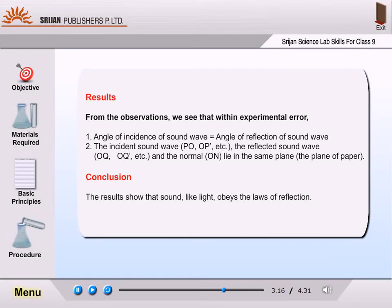Results. From the observations we see that within experimental error, angle of incidence of sound is equal to angle of reflection of sound wave. The incident sound wave, the reflected sound wave, and the normal lie in the same plane, the plane of paper.